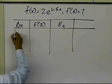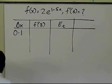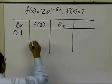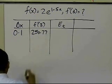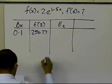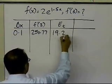When delta x is 0.1, I just calculated my f prime of 3 from the example, which turns out to 250.77, and the true error is 19.27.